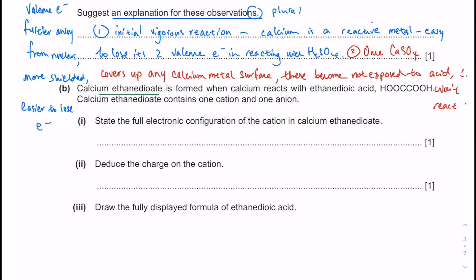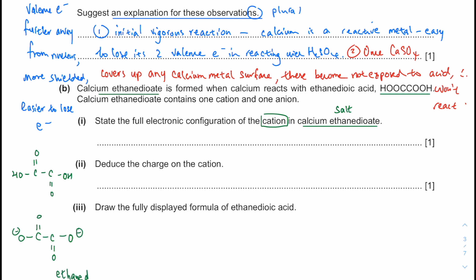In the next part of the question, we have calcium ethanedioic acid. Ethanedioic acid — dioic acid basically means it has two carboxylic acid groups. Ethanedioic acid is a two-carbon dicarboxylic acid. We are looking at the cations in calcium ethanedioate, which is the salt of this particular acid. When you lose your protons — because that is the definition of acid — this is the salt, called ethanedioate, and it is C2O4 2−.